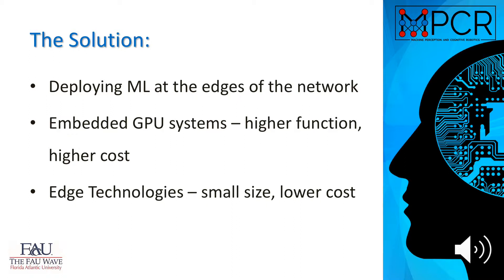The solution to this problem is deploying machine learning at the edges of the network using systems capable of doing the deep network processing we currently do in machine learning. One example is embedded GPU systems. While these have higher functionality, they have higher cost, but are functionally identical to the cloud-based systems we use today. The alternative is edge technologies — small, low-cost chips designed to be built directly into sensors and embedded systems. The idea is that we can extract the learned model from a deep neural network and deploy it on a chip with a simple network so it can run locally rather than transmitting all data over the network.